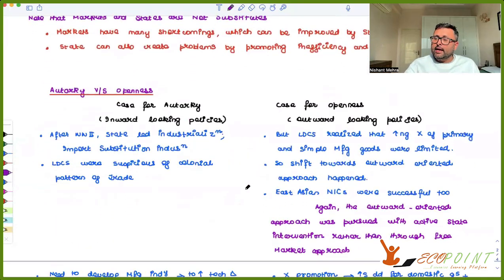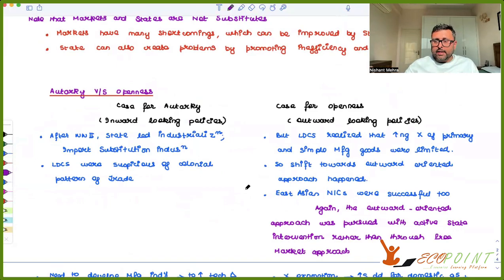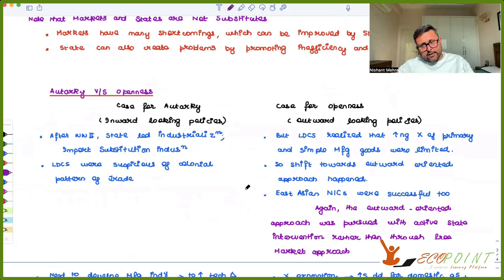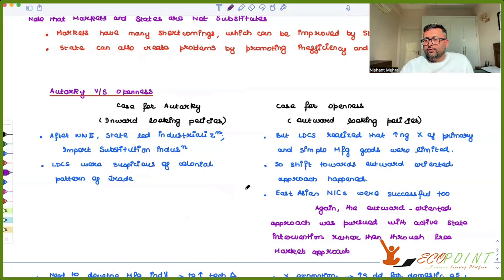In the second part of the reading, the author discusses the debate between autarky versus openness. One development path LDCs can take is the state intervention or free market approach — with a middle path. Similarly in the case of autarky and openness: autarky means inward-looking and self-reliant, while openness is outward-looking and export promotion. Here also the author says you need to have a middle path — you can't have just either of them.